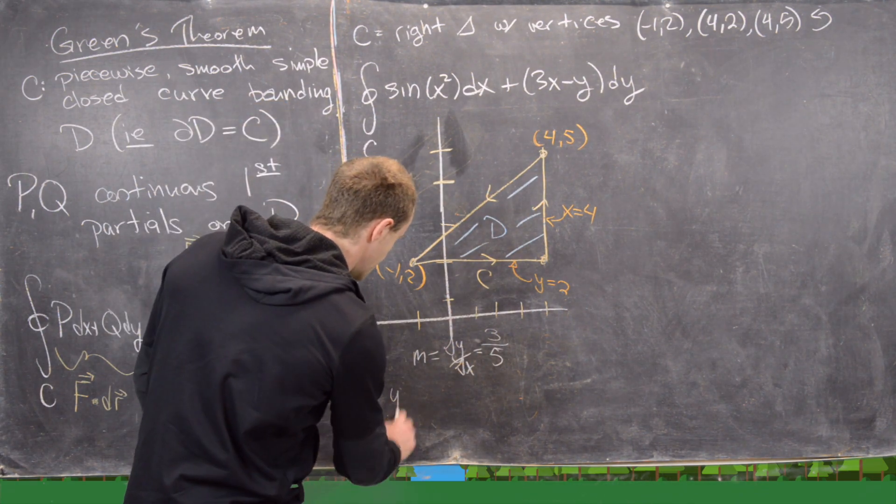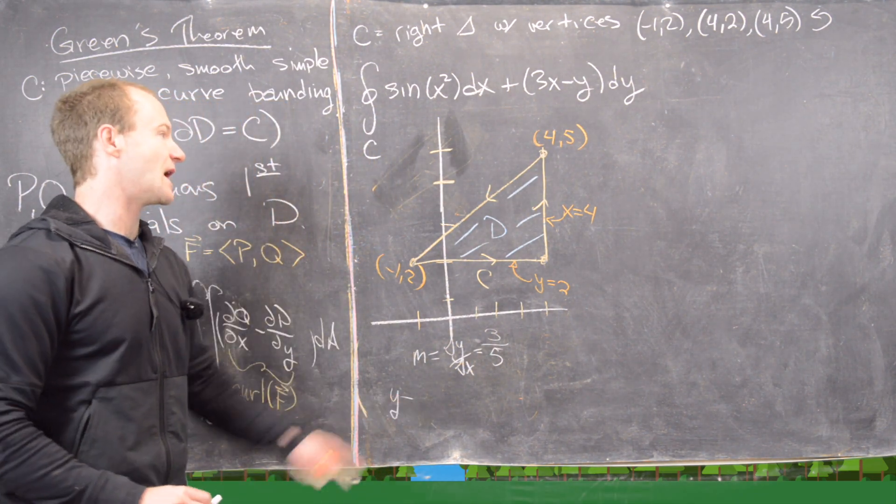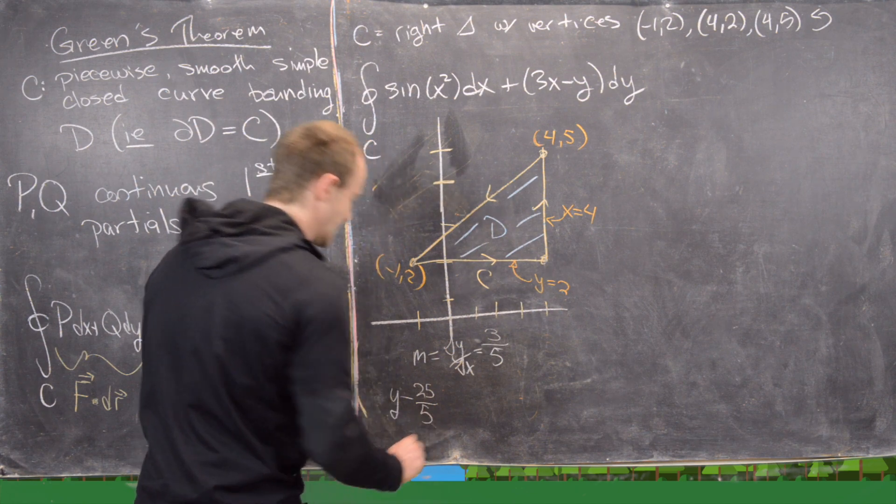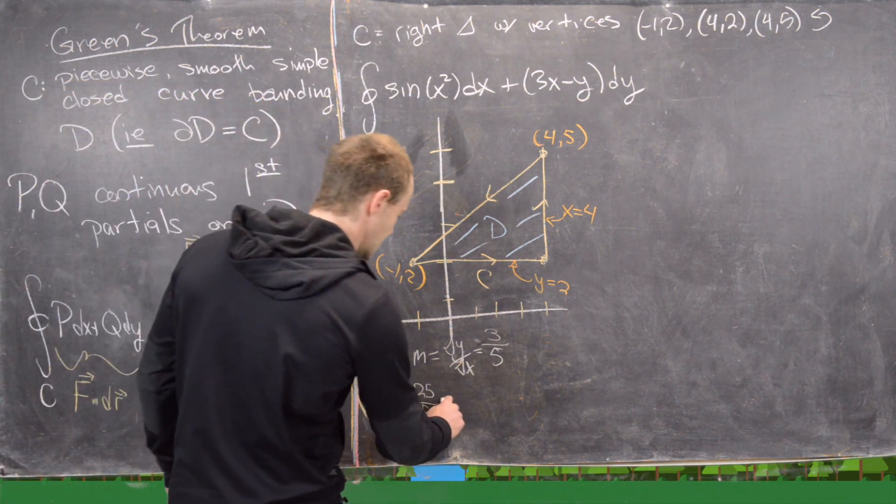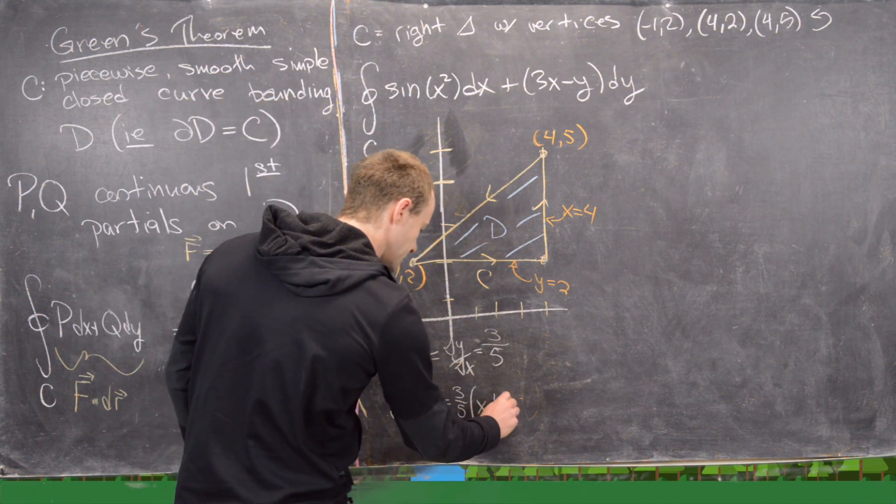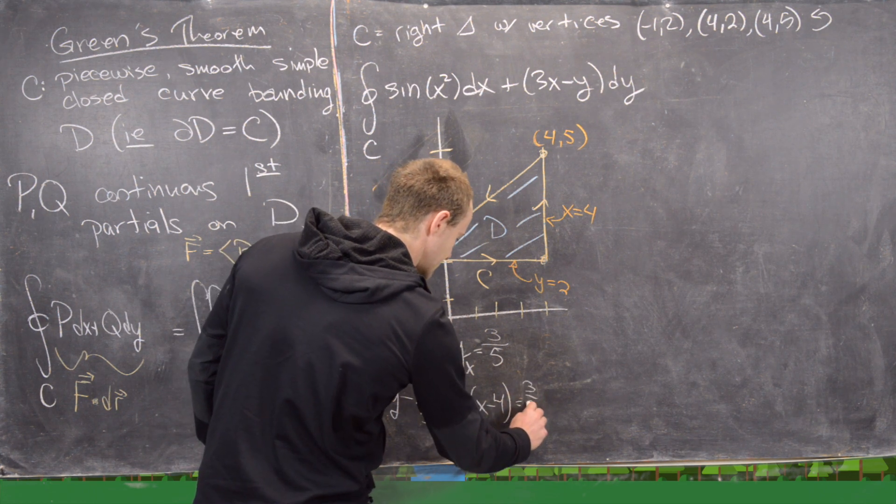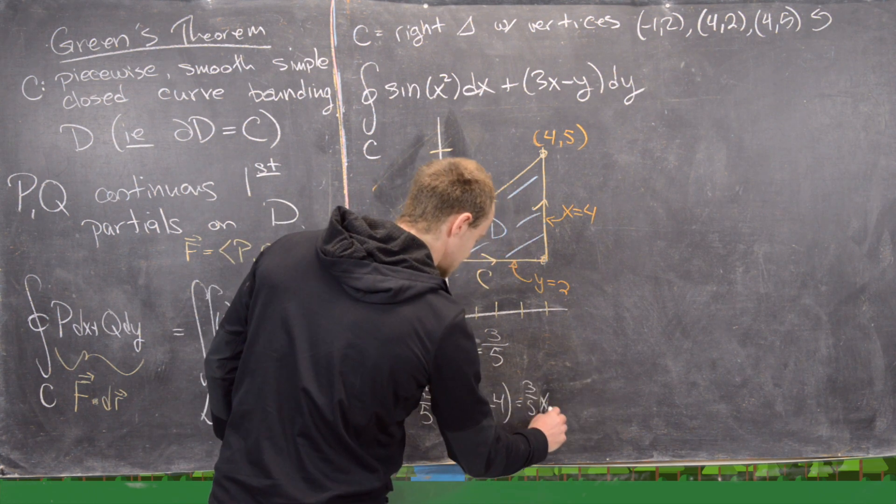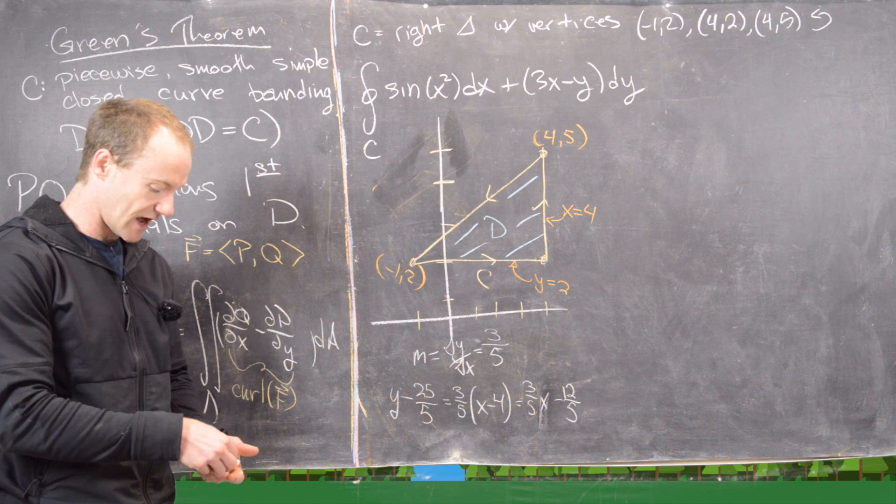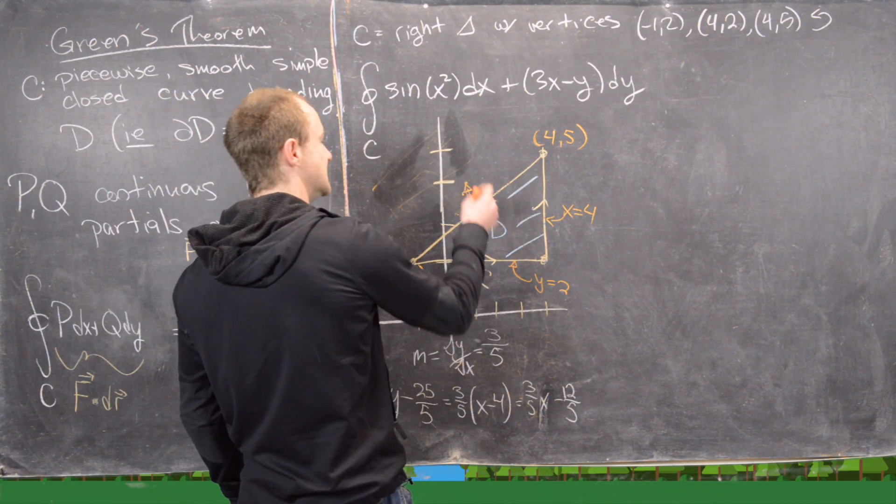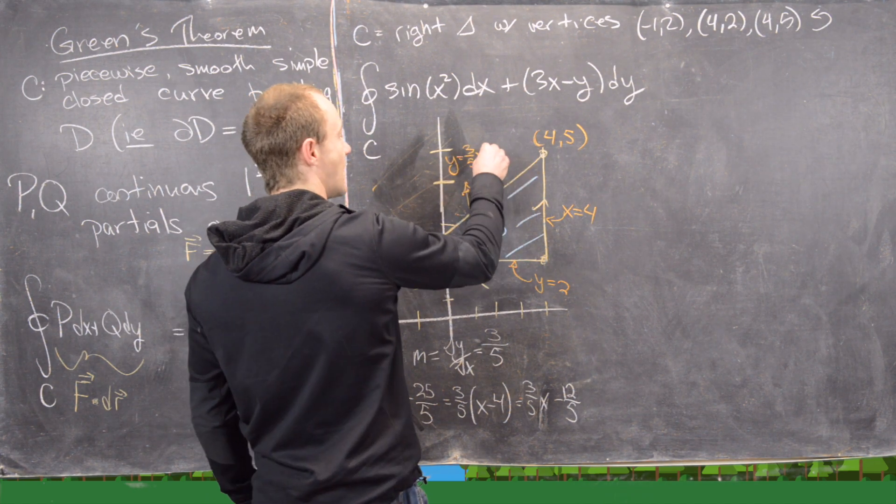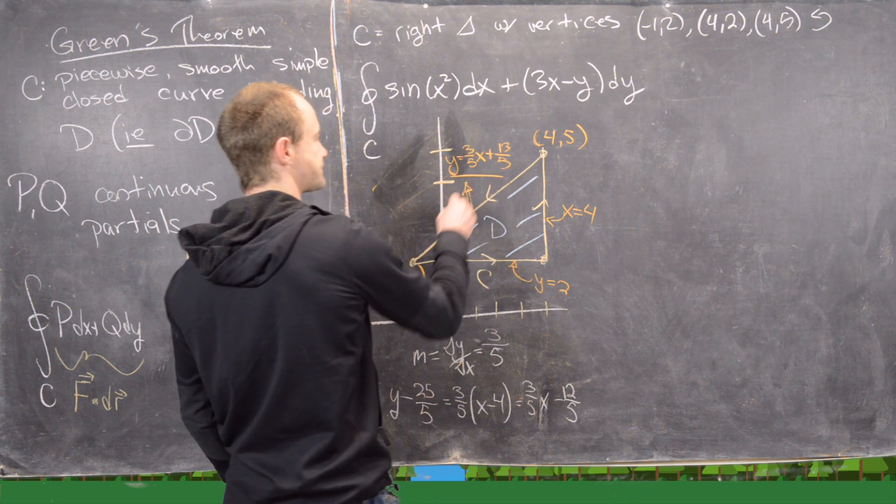The next thing we can notice is that using the point-slope form, we have y minus the y part of the point. The y part of the point is 5, but I'm going to write that as 25/5 because I'm going to need a fraction. So that's going to be equal to 3/5 and then x minus the x part of the point, which is 4. We can multiply that out. That is 3/5 times x minus 12/5. Putting this all together, we'll get the equation of this line is y = (3/5)x + 13/5.